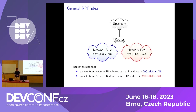So what is RPF? Let's say we have a router here in the middle, connected to different networks. With RPF the general idea is that the router, instead of just routing packets depending on the destination address, it would also validate the source address of incoming packets. So here, for example, we receive a packet from NetworkBlue,